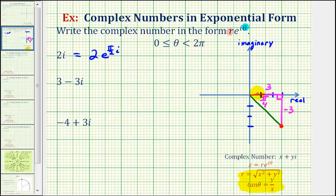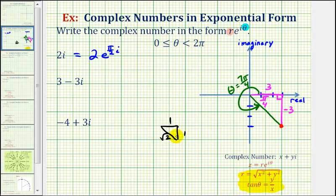This is helpful in two ways. First, we should recognize that angle theta would be two pi radians minus pi over four radians, or seven pi over four radians. Normally when we have a 45-45-90 reference triangle, we use the lengths one, one, square root two. But if we multiply each side by three, the hypotenuse of this reference triangle — or r — equals three square root two. So three minus three i equals three square root two times e raised to the power of i times seven pi over four.